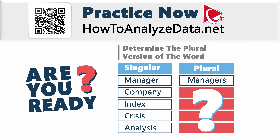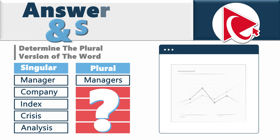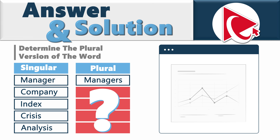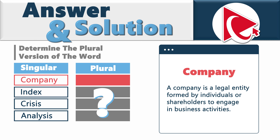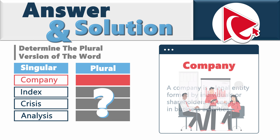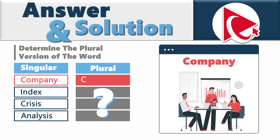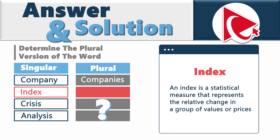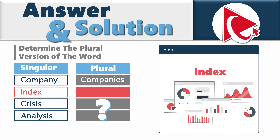Are you ready with your solution? I hope you are, so let's move forward and compare our versions of the answer. To better understand the plural versions of the words, let's start with the word's definition. Company is a legal entity formed by individuals or shareholders to engage in business activities. The plural version for companies is spelled C-O-M-P-A-N-I-E-S, pronounced as 'companies.'